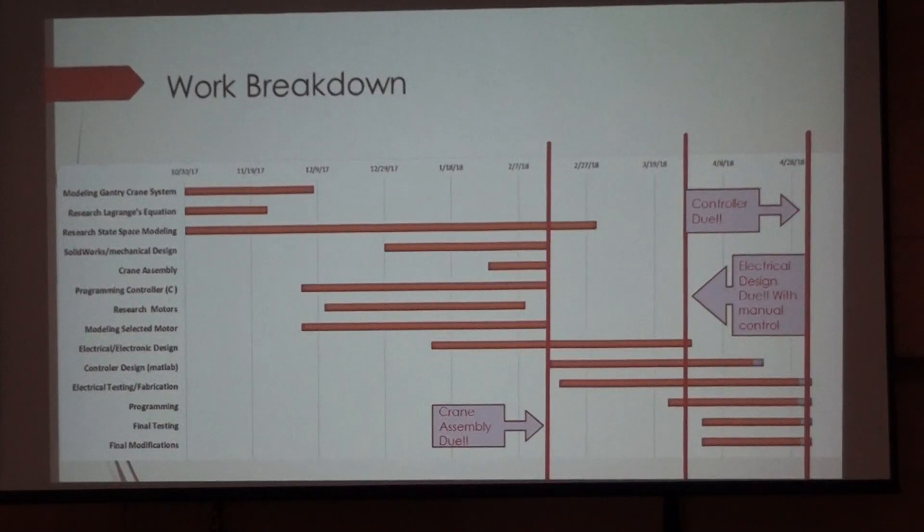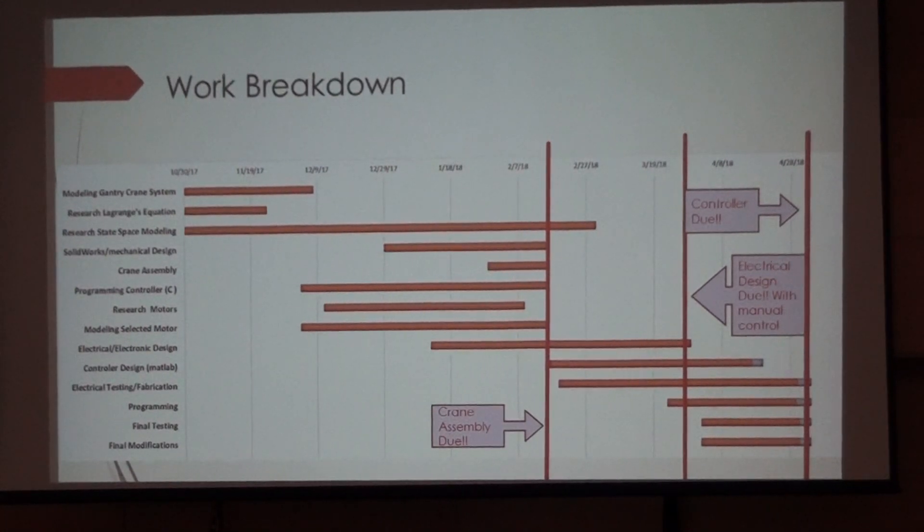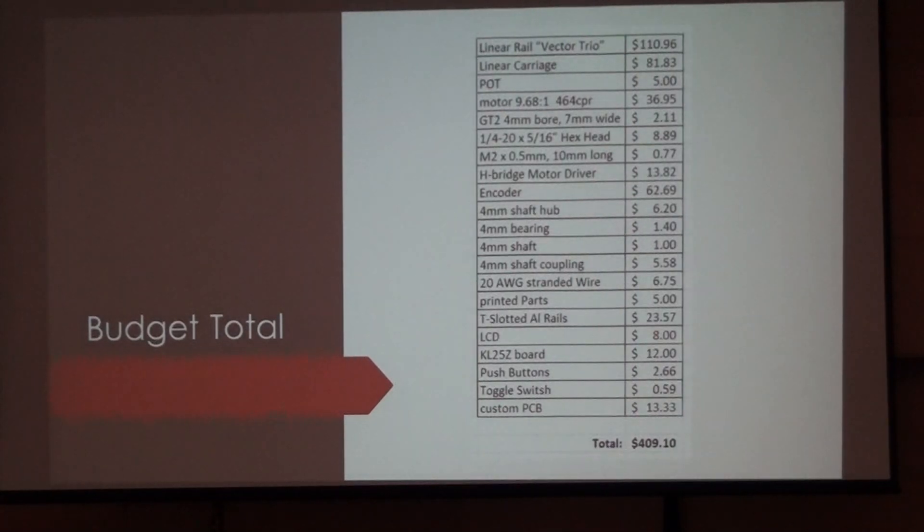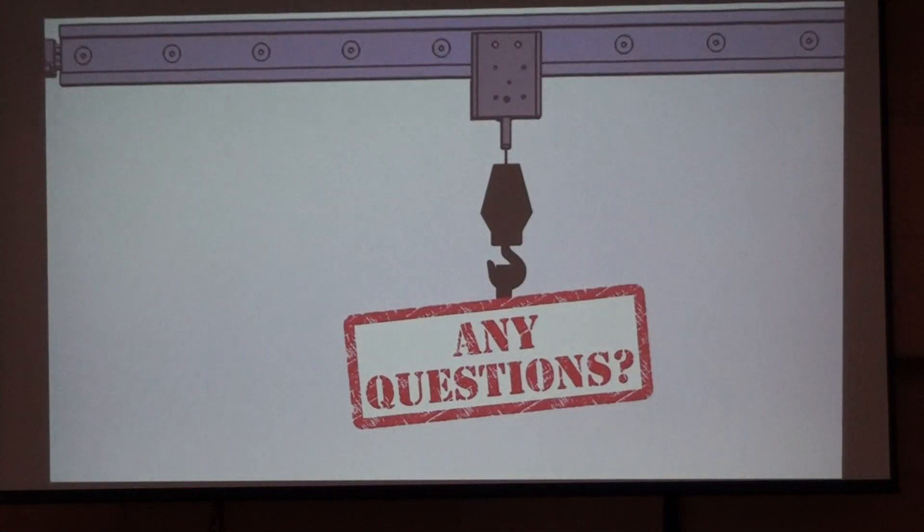And so here's the work breakdown. As you may have guessed, the biggest thing was research state-space modeling, that went on for quite a while. And then we have a budget, and the total budget was fairly pricey. The most expensive thing was the linear rail. Any questions before we go over and see it in action?